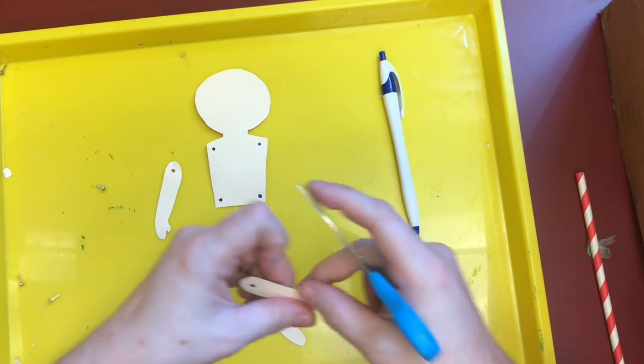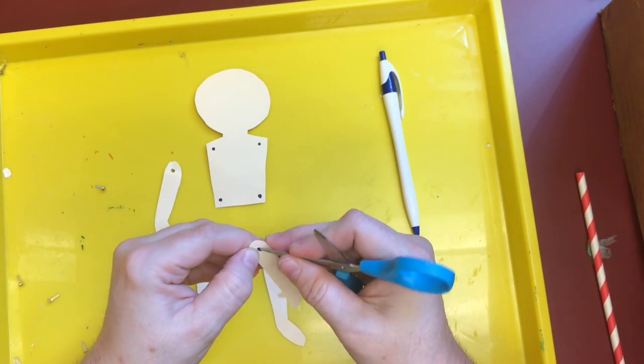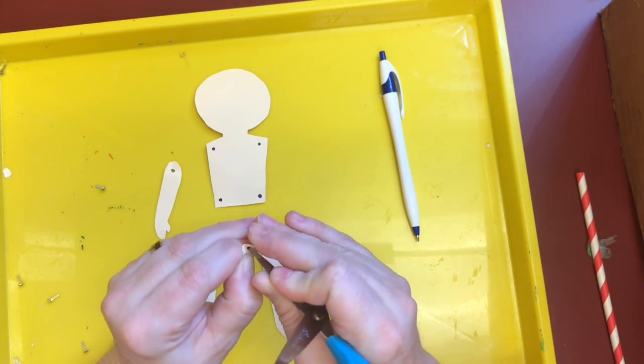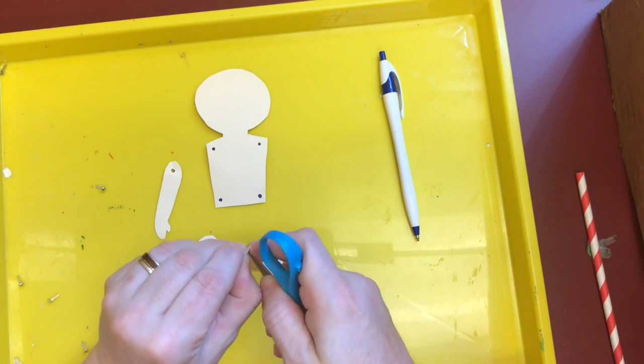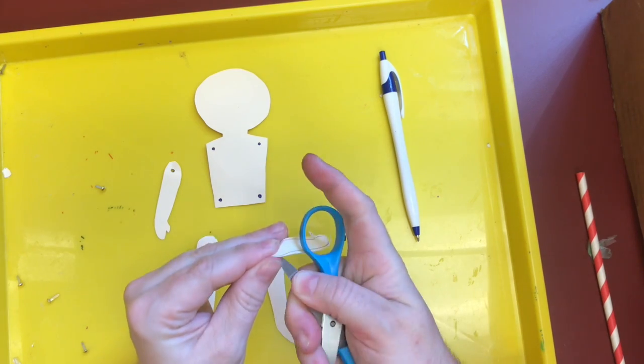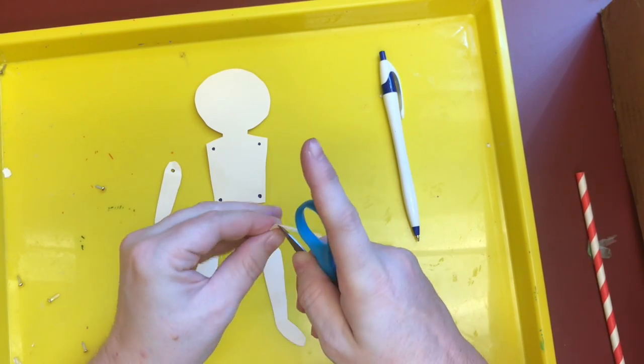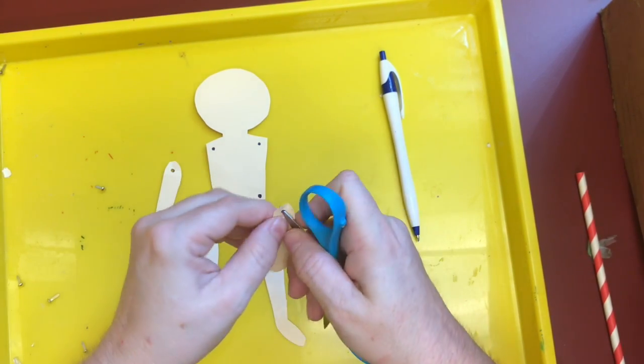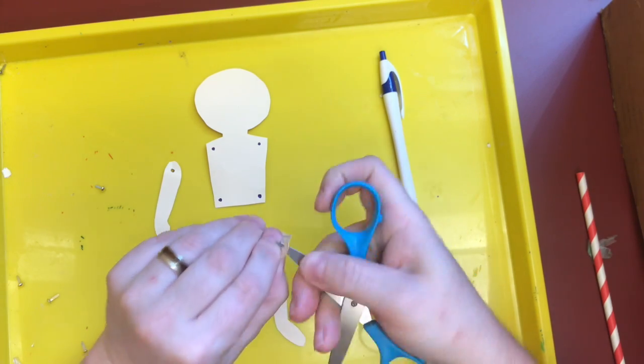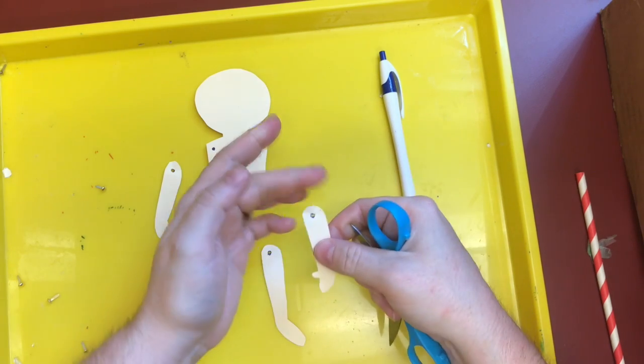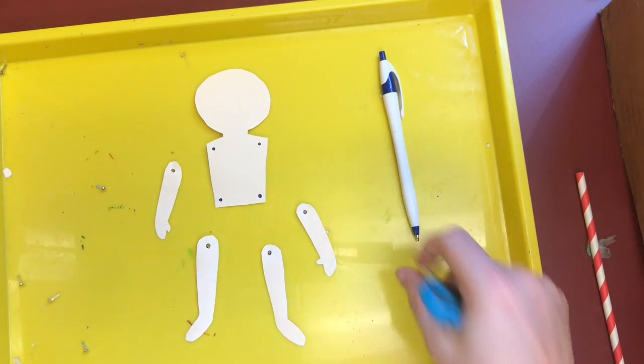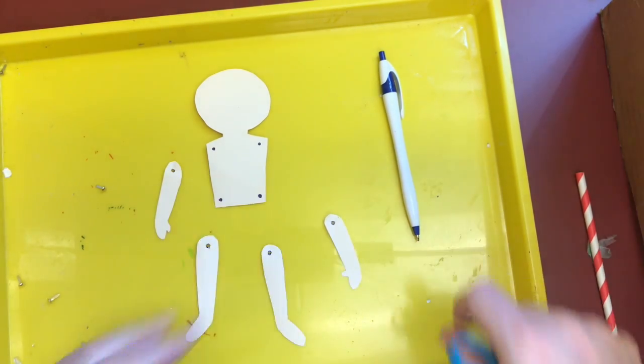But you want to be very, very careful that you don't poke holes in yourself while you're poking holes in your puppet. And if you rip your puppet, that is okay. I've done it while I was making practice puppets. There are a couple things you can do. You can either put some tape on and poke a hole through the tape.